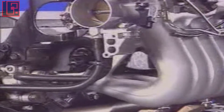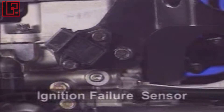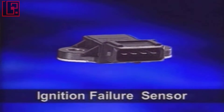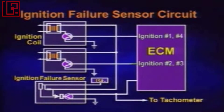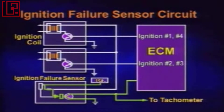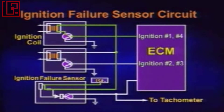The ignition failure sensor monitors ignition coil operation using the voltage change generated at the ignition primary coil. When the ECM drives the power transistor inside the ignition coil, the primary coil is electrified. When power is shut off to the primary coil, surge voltage is generated at the primary coil, and the ignition failure sensor monitors this surge voltage to monitor ignition coil operation.